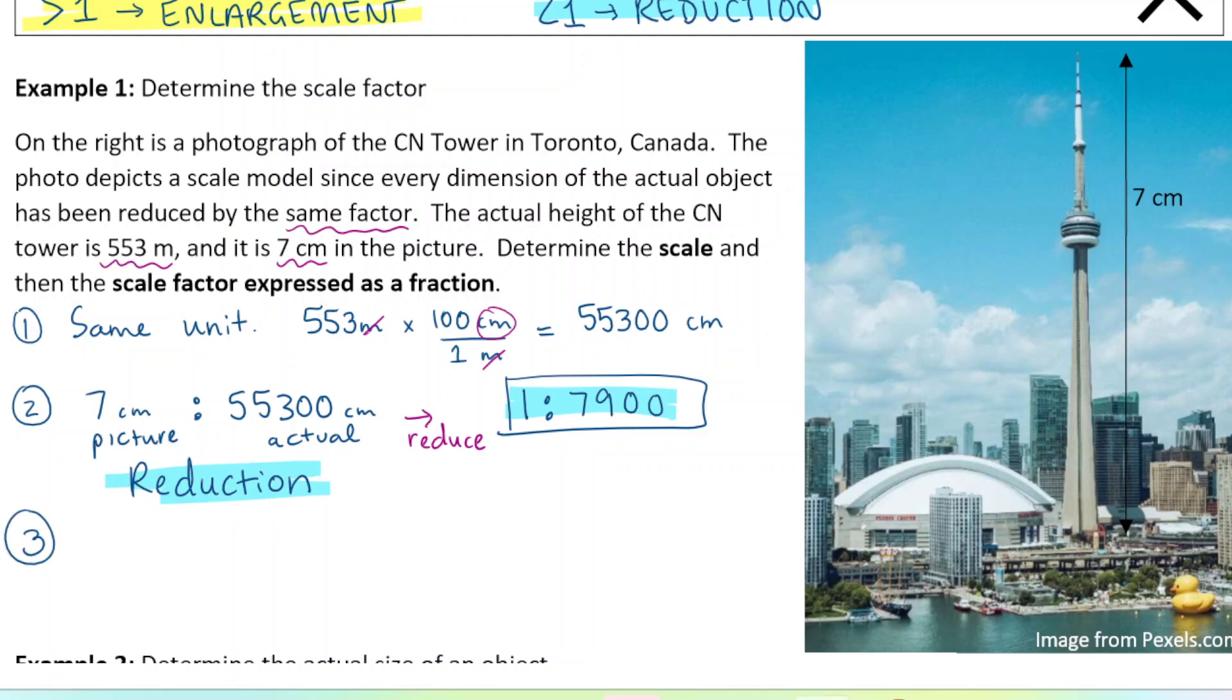And lastly, we're going to do the scale factor, and it's basically just the scale written as a fraction. So it would be one over 7,900. If you multiply one over 7,900 by the actual size, you get the height. So it's like the multiplier that tells you how big your drawing or how tall your drawing should be. That's our scale factor. And this is less than one, because we have a reduction here. We have a smaller image than the actual size.